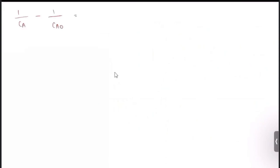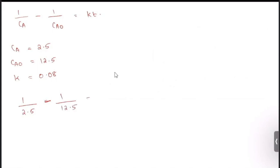Substituting the values into 1/cA - 1/cA0 = k·t: cA = 2.5, cA0 = 12.5, and k = 0.08. So: 1/2.5 - 1/12.5 = 0.08·t. Solving this equation gives t = 4 seconds.